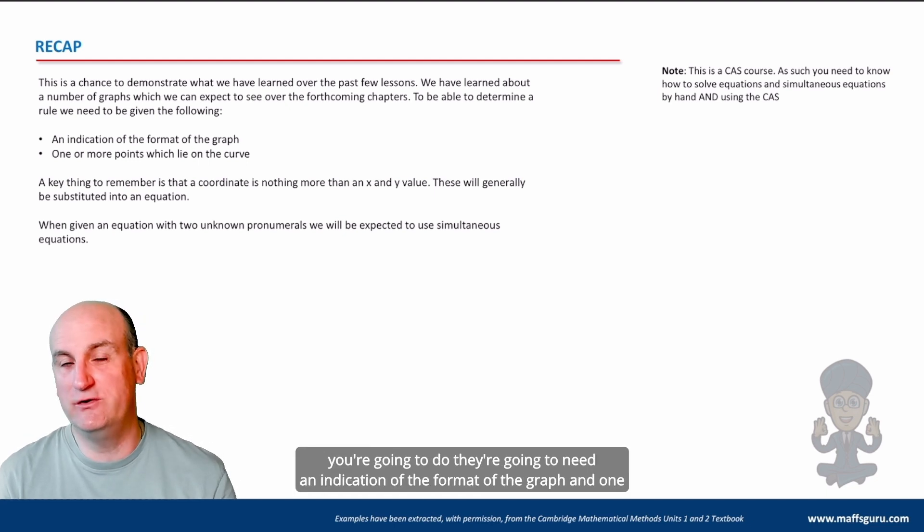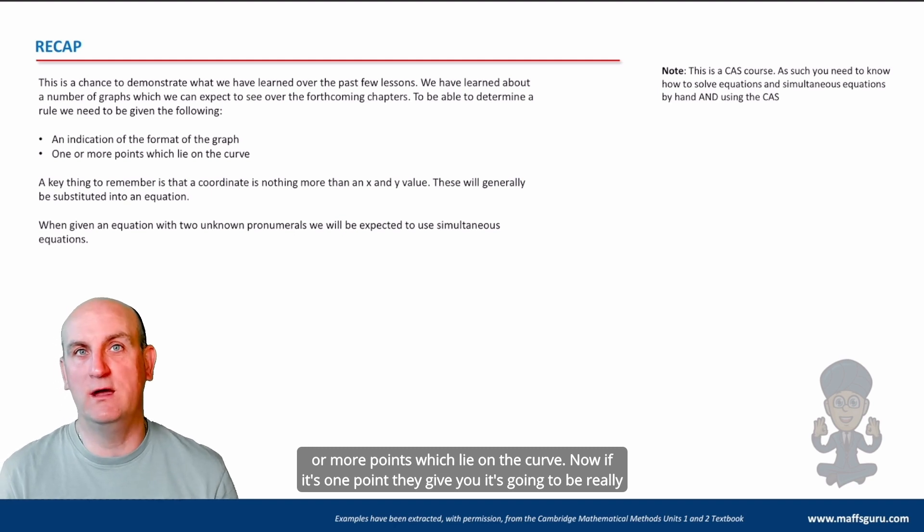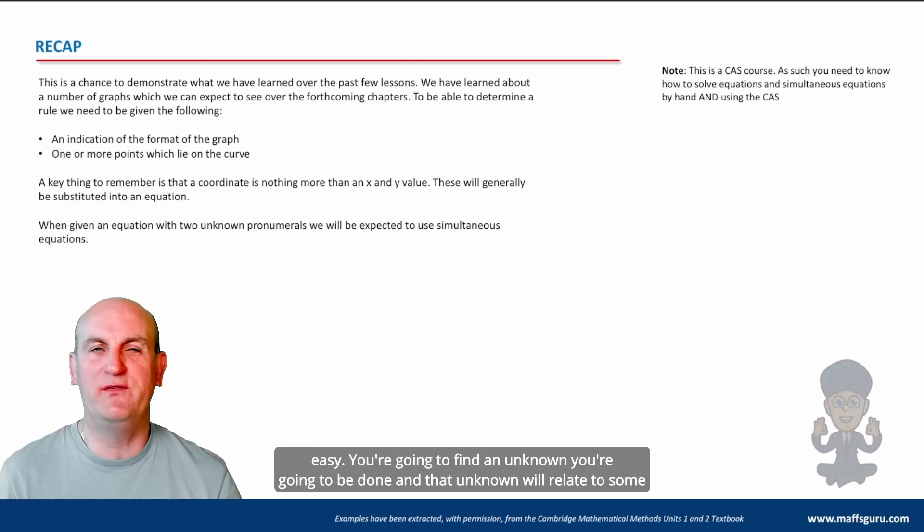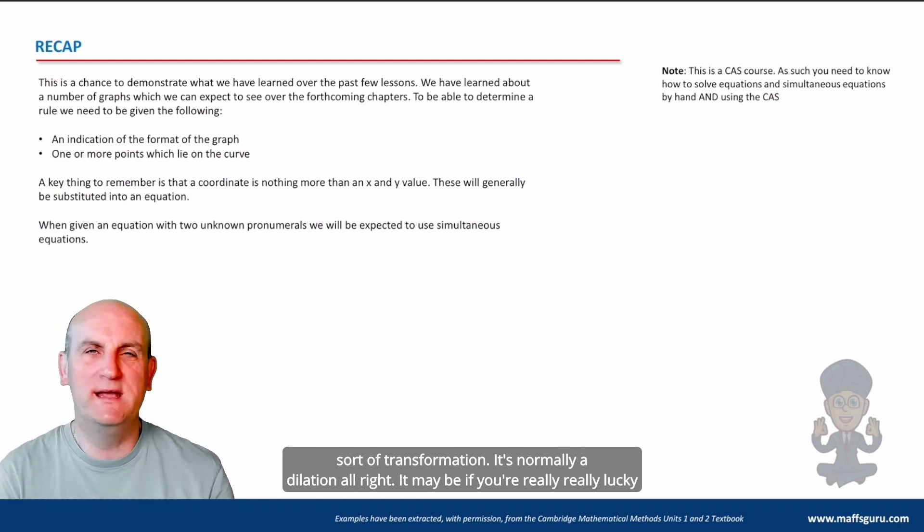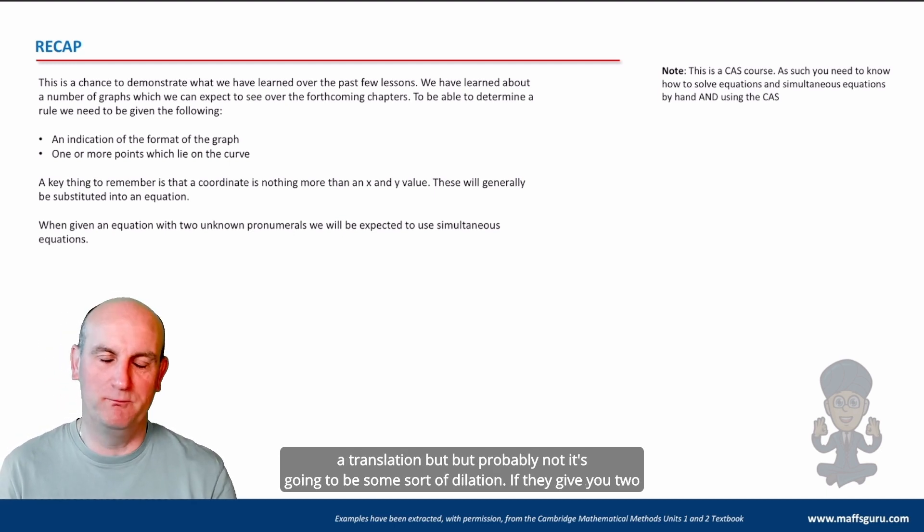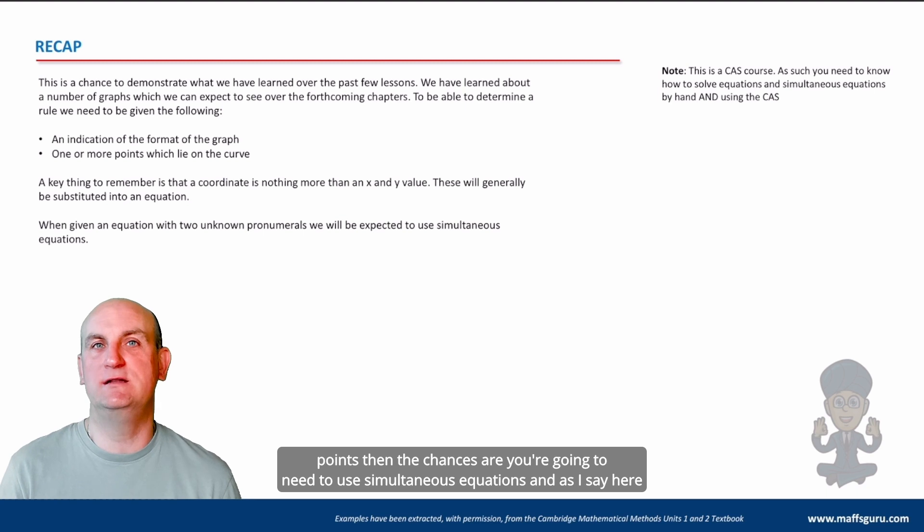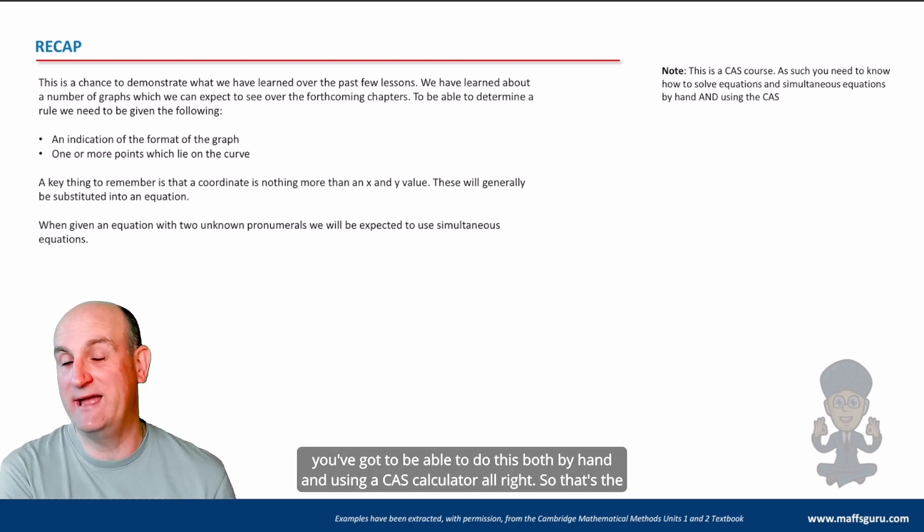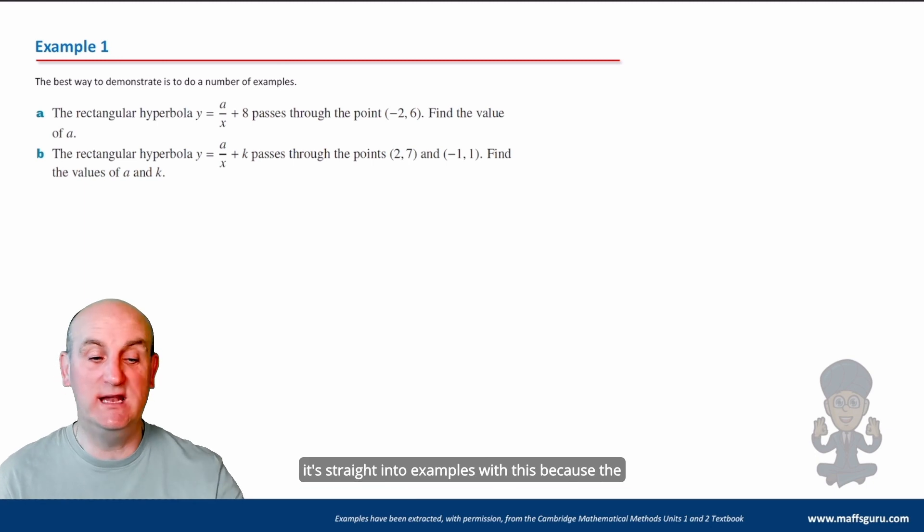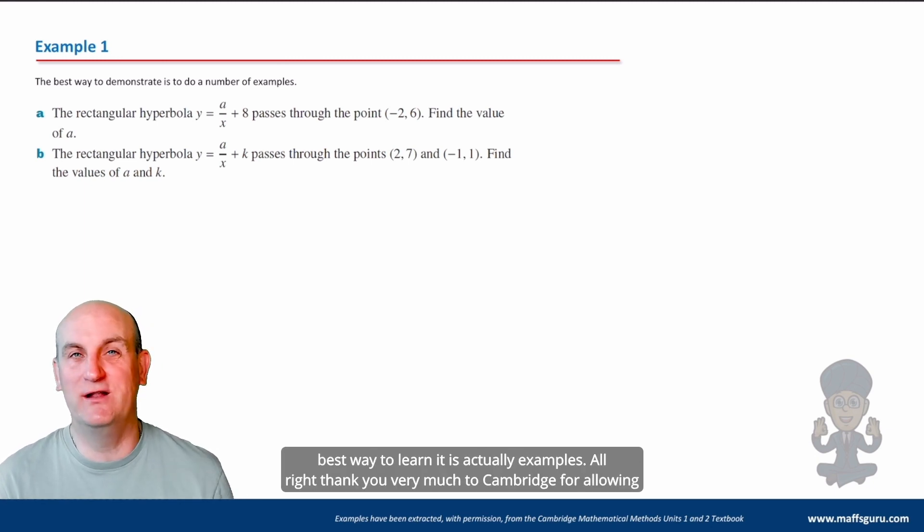It's more about learning what the question's trying to tell you to adapt to the basic understanding that you're going to need throughout it. So let me see what we've got here. Right, so basically for the questions you're going to do, they're going to need an indication of the format of the graph and one or more points which lie on the curve. Now if it's one point they give you, it's going to be really easy. You're going to find an unknown, you're going to be done. And that unknown will relate to some sort of transformation, normally a dilation. If they give you two points, then the chances are you're going to need to use simultaneous equations. And as I say here, you've got to be able to do this both by hand and using a CAS calculator.